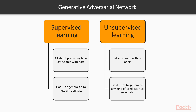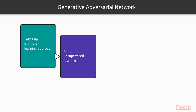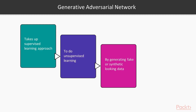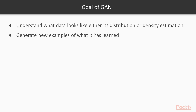Humans learn by observing and experiencing the physical world, and our brains are very good at prediction without doing explicit computations to arrive at the correct answer. Supervised learning is all about predicting a label associated with the data, and the goal is to generalize to new, unseen data. In unsupervised learning, the data comes in with no labels, and the goal is often not to generalize any kind of prediction to new data. The Generative Adversarial Network takes a supervised learning approach to do unsupervised learning by generating fake or synthetic-looking data and tries to determine if the generated sample is fake or real. The actual goal of GAN is to understand what the data looks like — either its distribution or density estimation — and be able to generate new examples of what it has learned.